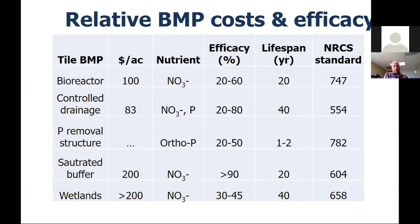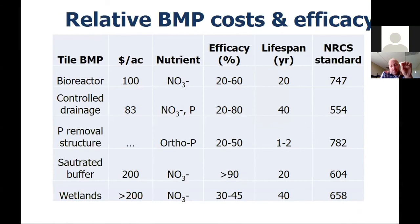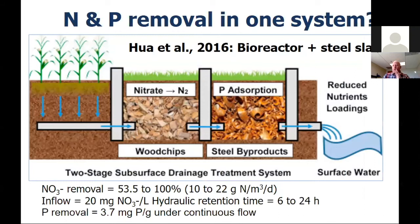Here's a summary chart — take this with a grain of salt — pulling from the different literature sources. It shows the different tile BMPs, approximate cost per acre, the nutrient each is effective for, relative efficacy, lifespan, and the NRCS standard. There is an NRCS standard for each one of these best management practices, though not every state has adopted them. Most Midwest states have NRCS standards for all these practices.